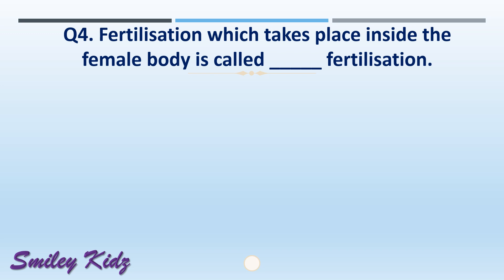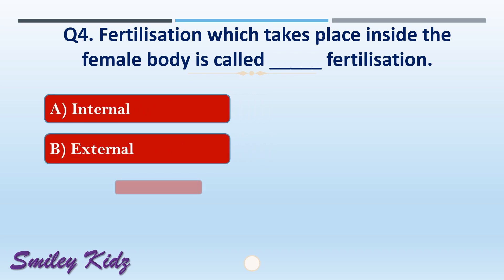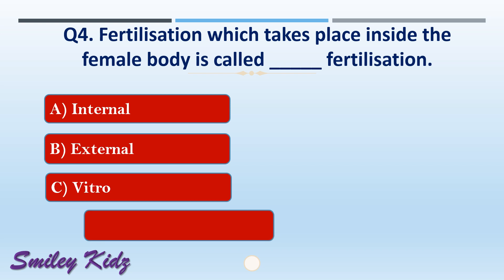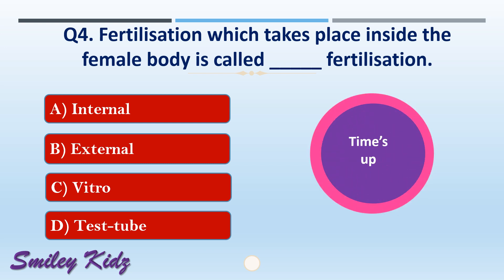Question number four: fertilization which takes place inside the female body is called dash fertilization. The options are: A) internal, B) external, C) vitro, or D) test tube. The right answer is option A, internal. Fertilization which takes place inside the female body is called internal fertilization.